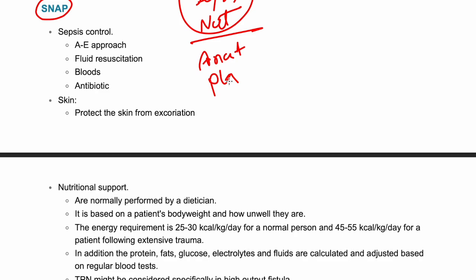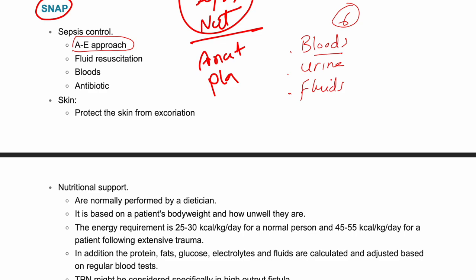For sepsis, we follow the A-to-E approach and give the patient the Sepsis Six. The mnemonic BUFFALO helps: take Bloods including blood culture, monitor Urine output with catheter and urine dip, give Fluids, administer Antibiotics, check Lactate with an ABG.